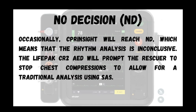And then the last is no decision, or ND. Occasionally it will reach an 'I'm just not sure' — ND — which means the rhythm is inconclusive. It will prompt the rescuer to stop chest compressions to allow for a traditional analysis using SAS if we're talking the CR2, or if we're talking the 35, it's the provider themselves. If it's in manual mode, if it's in analyzed mode, then again it would function like the CR2.